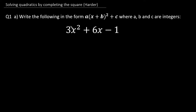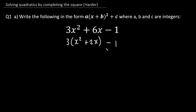The first thing you want to do is factorize the highest common factor — a number, not a variable — from the first two terms. In this case it's going to be 3, so I'm going to factor out 3, giving us 3(x² + 2x) − 1. Now for the next step we're going to complete the square on those two terms inside the brackets.